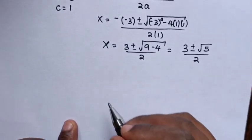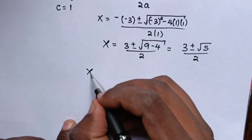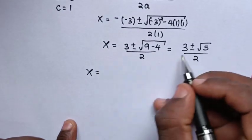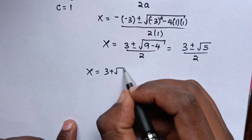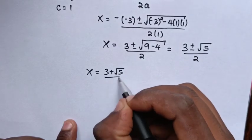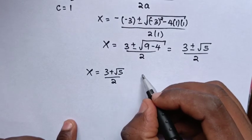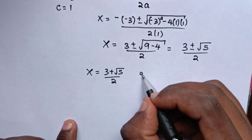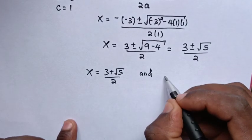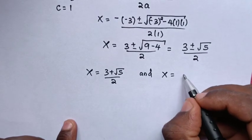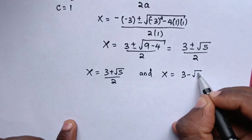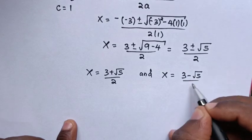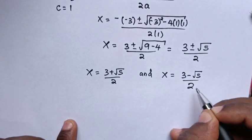From the plus or minus, x equals (3 plus square root of 5) over 2, and the other value is x equals (3 minus square root of 5) over 2.